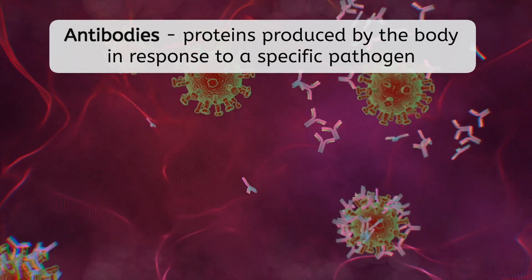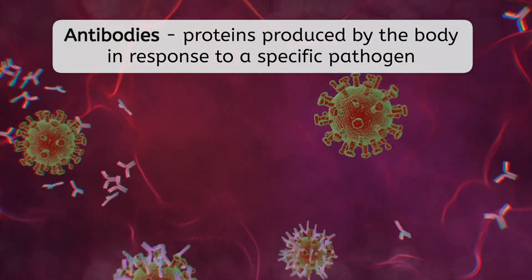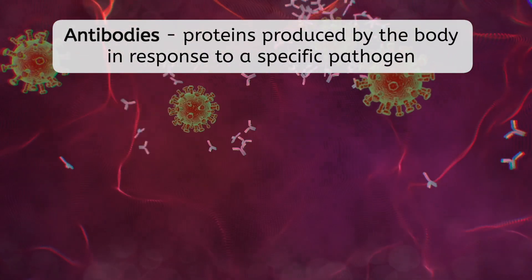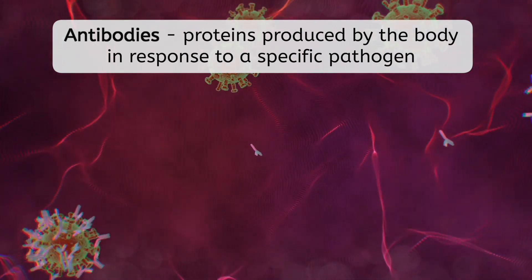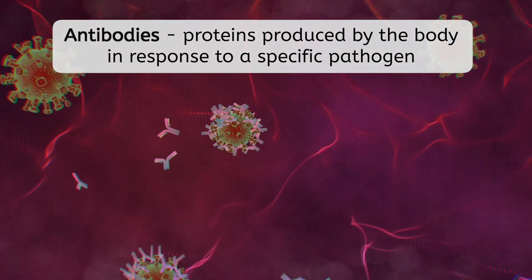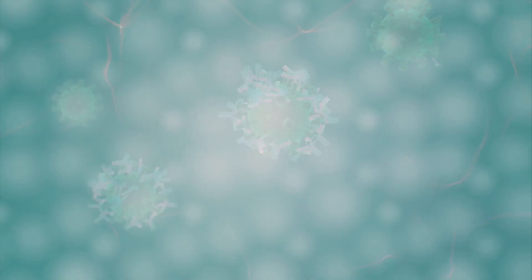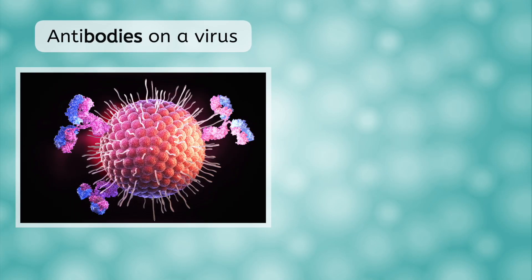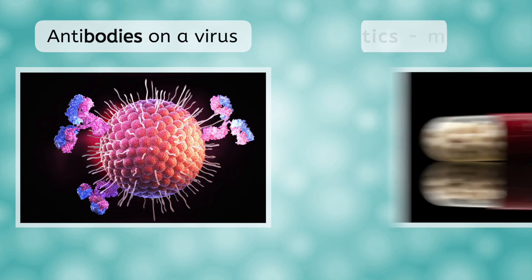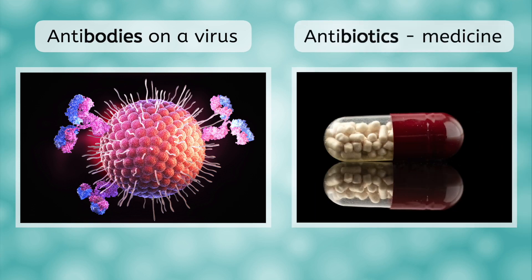Antibodies are proteins that are produced by the body in response to a specific pathogen, to help remove the invading cell or virus. Don't get antibodies confused with antibiotics. Your body produces antibodies on its own, while antibiotics are a type of medication you may take to help cure a bacterial infection. We'll see examples of white blood cells and antibodies in action as we look at how the immune system functions.